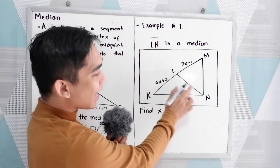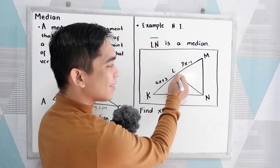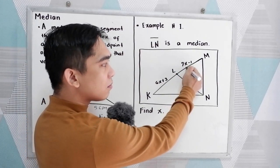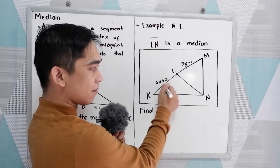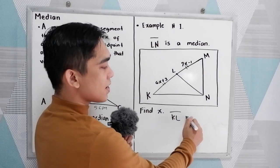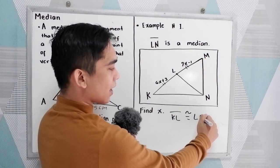Since LN is a median, therefore L is our midpoint. Now KL is congruent to LN.